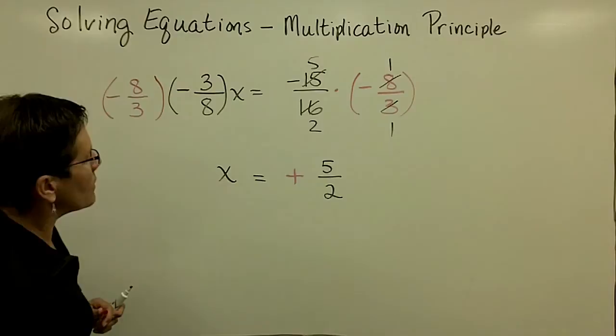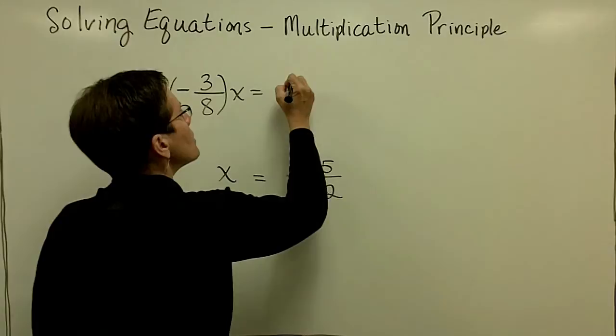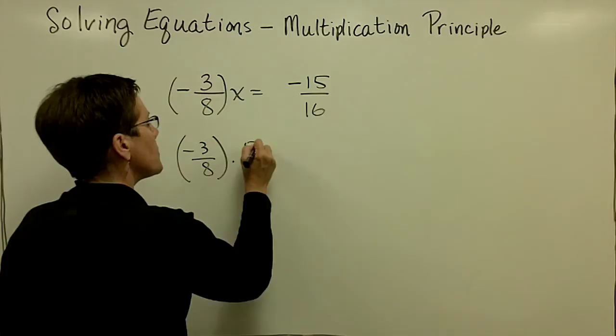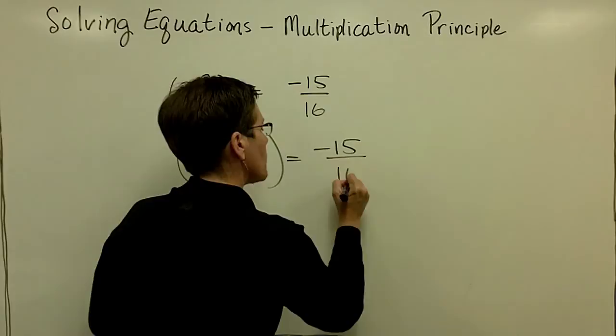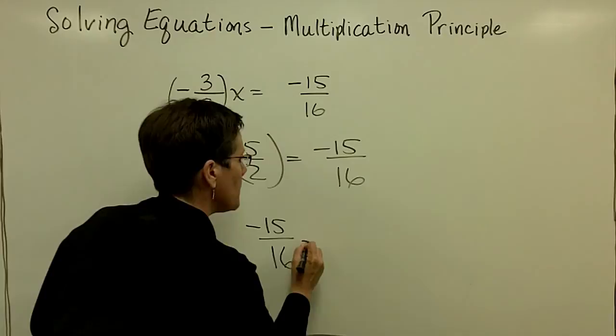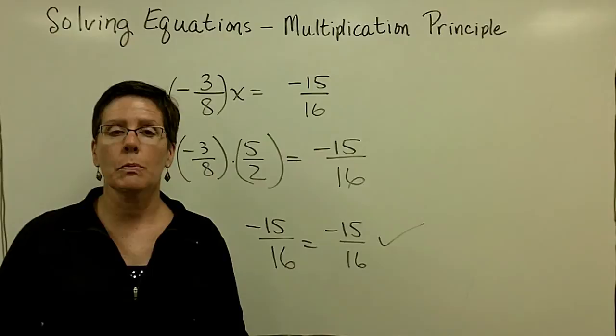Let's check this one. My answer was 5 halves. I'll put the original problem back up — that was negative 15 over 16 — and I'm going to plug in 5 halves for x. So negative 3 eighths times 5 halves, and I wonder if that equals negative 15 over 16. Multiplying the numerators: negative 3 times positive 5 is negative 15, and 8 times 2 is 16. That is what the right side is equal to, so I know I got that problem correct — I solved it correctly by checking after the fact.